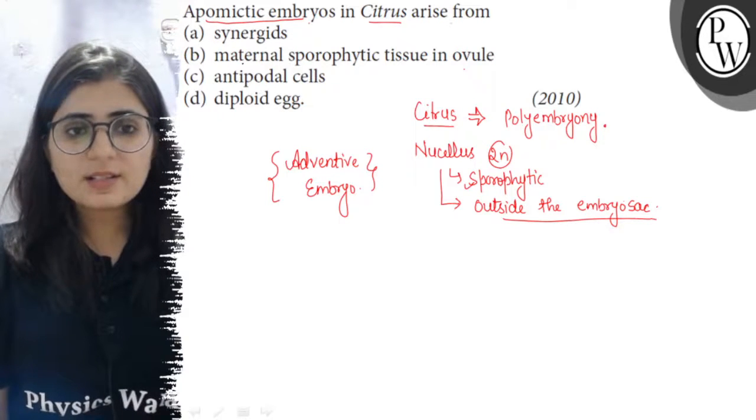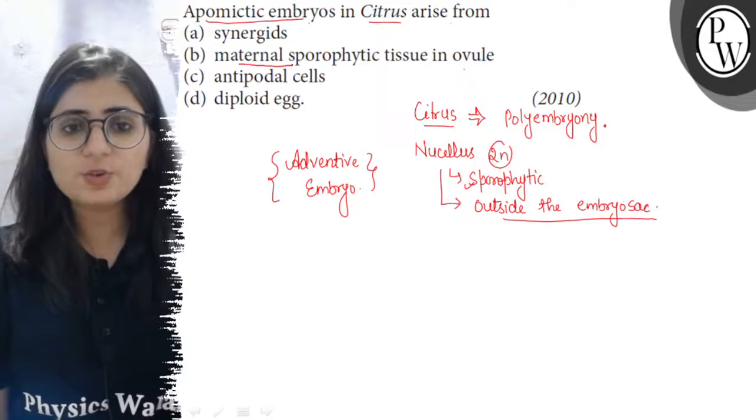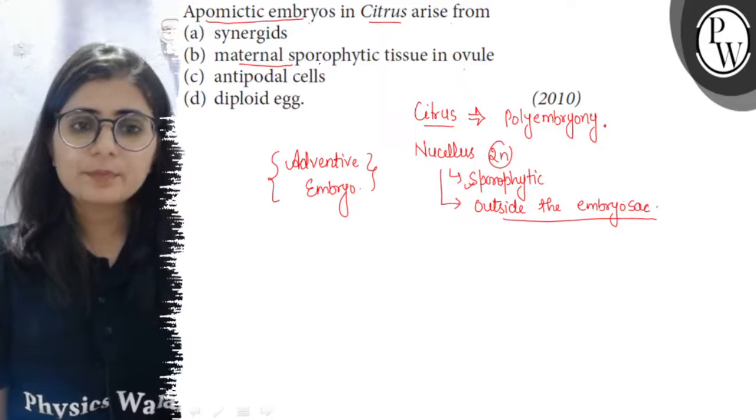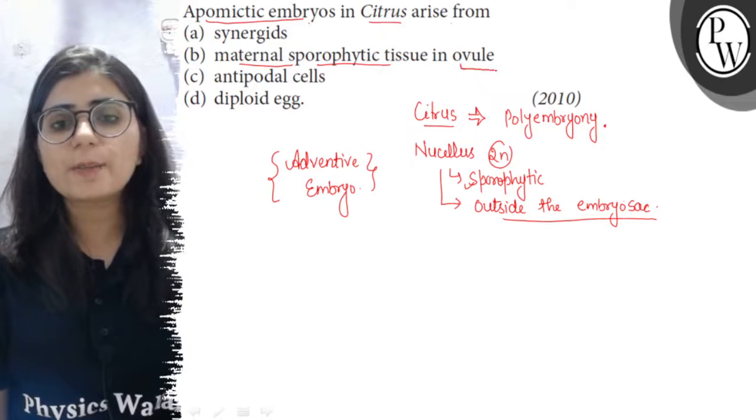The nucellus cells are maternal cells, meaning they are present in the maternal tissue or the female parts. They are sporophytic cells or sporophytic tissues which are present in the ovule.